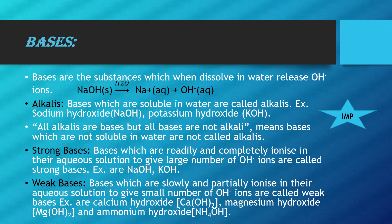Starting with bases — bases are the substances which, when dissolved in water, release OH⁻ ions. OH⁻ ions are called hydroxide ions. For example, when solid NaOH dissolves in water, it produces Na⁺ ions and OH⁻ ions. Because it releases OH⁻ ions, hence it is a base.